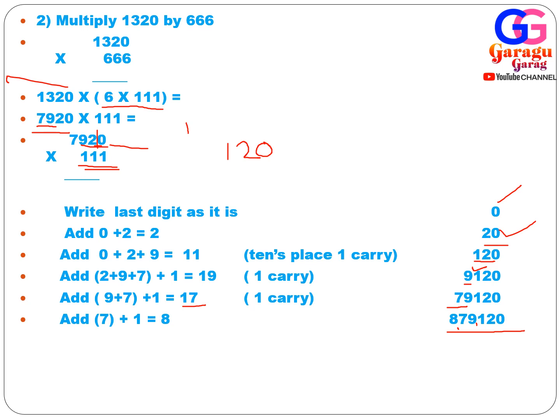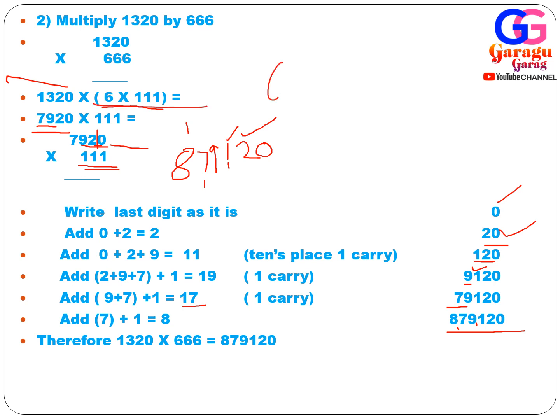So the answer is 8,79,120. The technique is easy: just split 666 as 6 × 111 at the start, multiply to get 7920 × 111, and then apply the series-of-ones method to get the final answer.